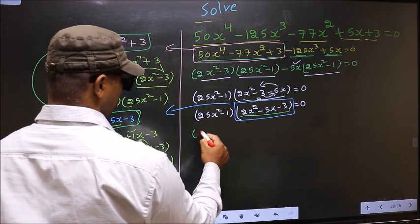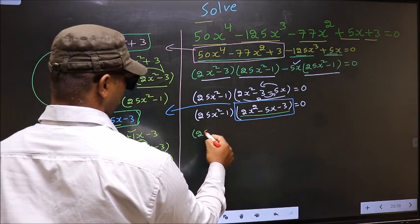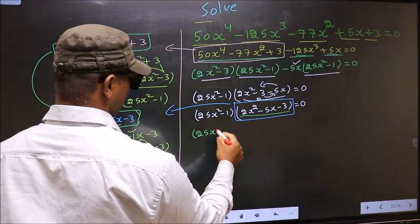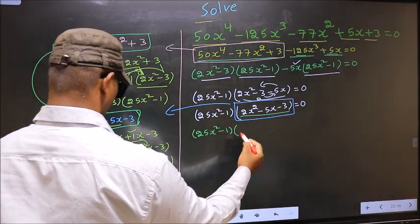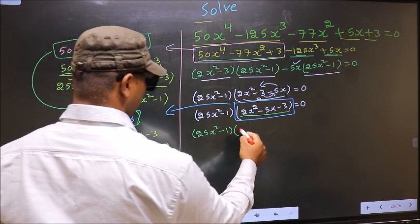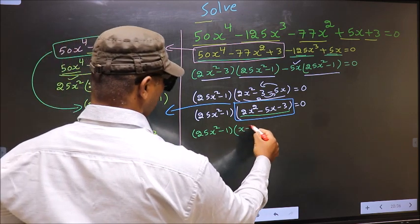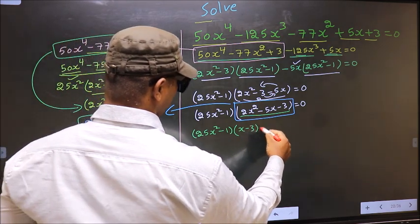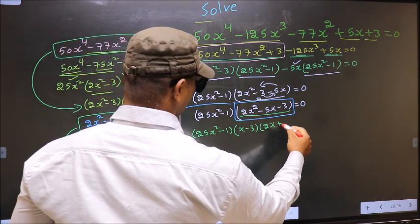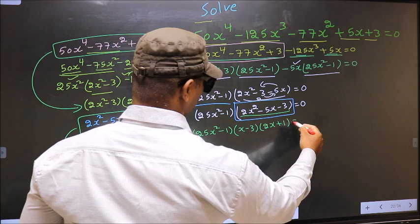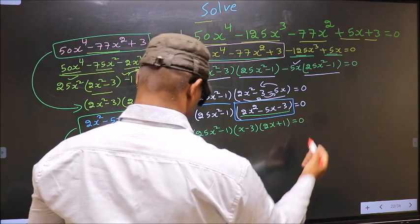In place of the quadratic 2x² minus 5x minus 3, we replace it with its factors. So this equation becomes (25x² minus 1)(x minus 3)(2x plus 1) equal to 0.